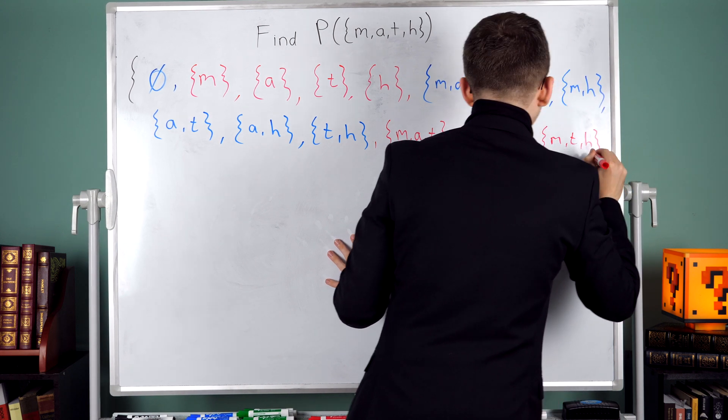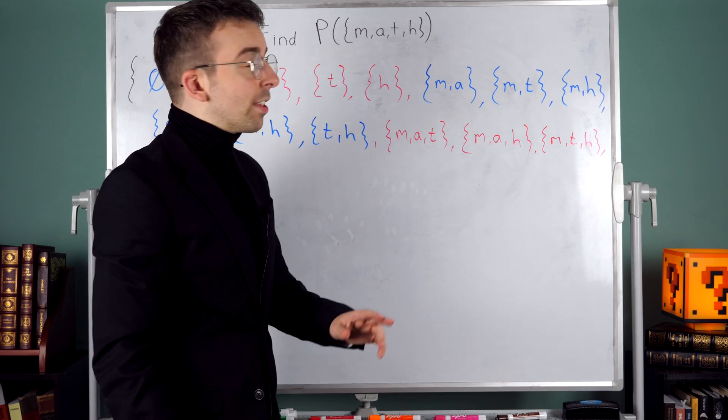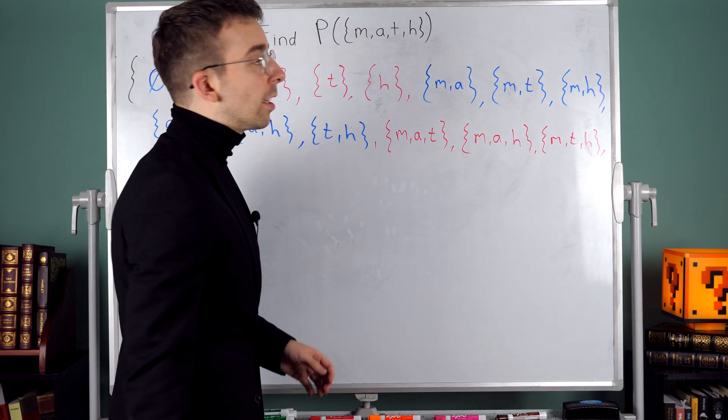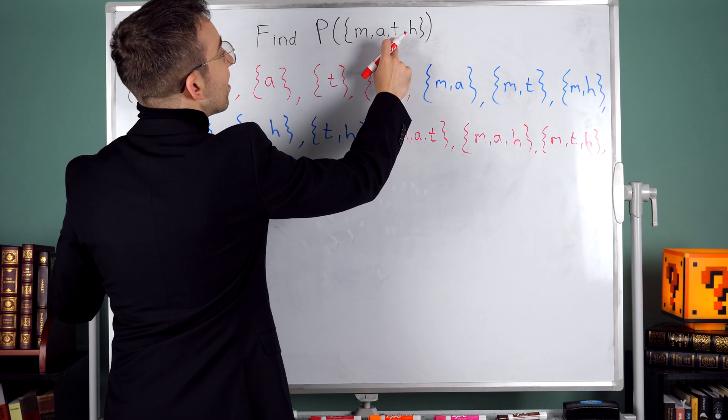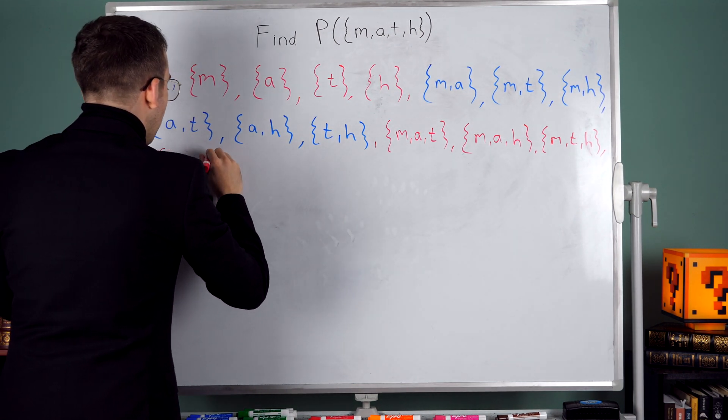m, t, and h, and I'll have to go to the next line again. Next I think the last subset with three elements is this one that has a, t, and h, so I'll write that one next.